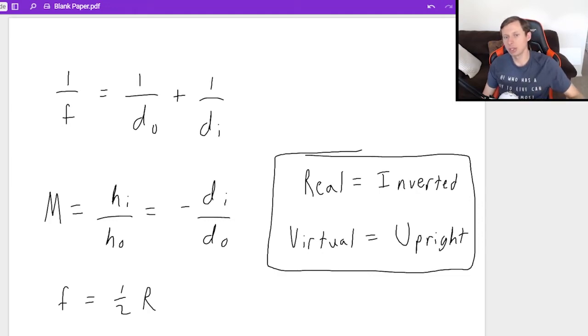And then the last two things we want to remember is that real images just means inverted, virtual images simply mean upright. It's more complicated than that in reality, but for all intents and purposes today, this is all we need to know. Okay, so let's look at some problems.